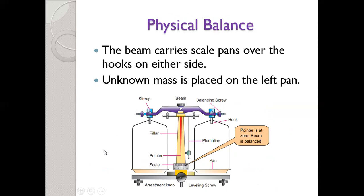The unknown mass is placed on the left pan. In the right pan, there are known masses. By comparison, we can measure the mass of the unknown object. When we look at the physical balance in balanced position, the pointer is at zero. The first condition for measurement is that the physical balance is balanced — the pointer is at zero. After that, we place the object and add known masses to balance it.